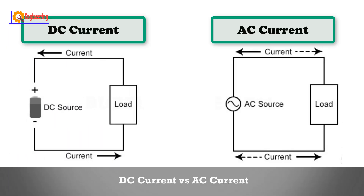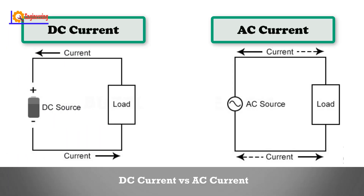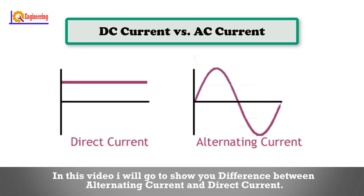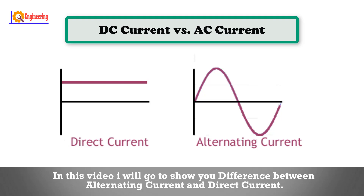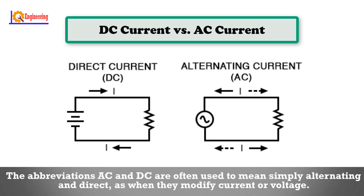DC current versus AC current. In this video, I will show you the difference between alternating current and direct current. The abbreviations AC and DC are often used to mean simply alternating and direct, as when they modify current or voltage.